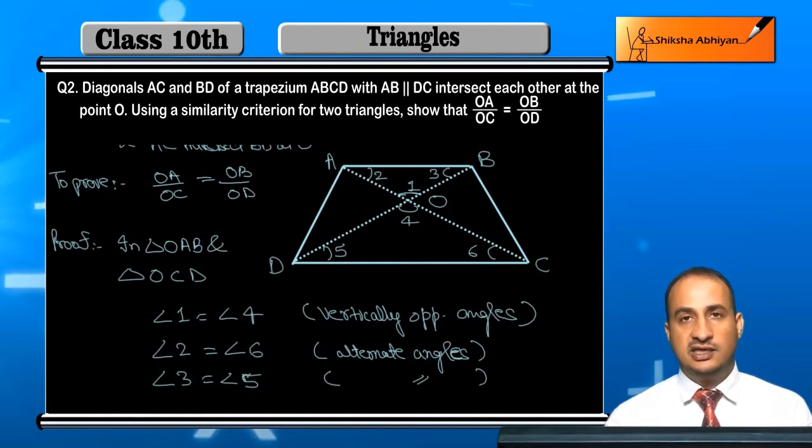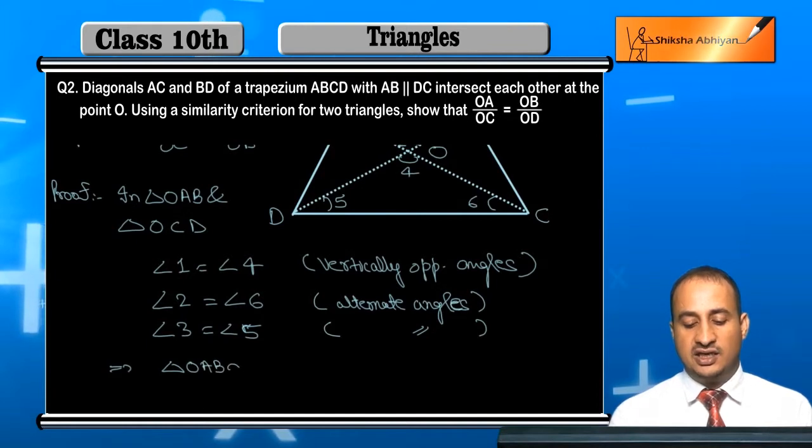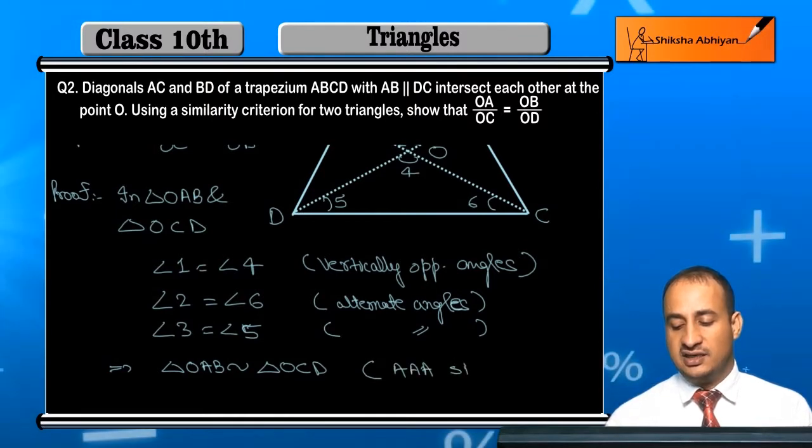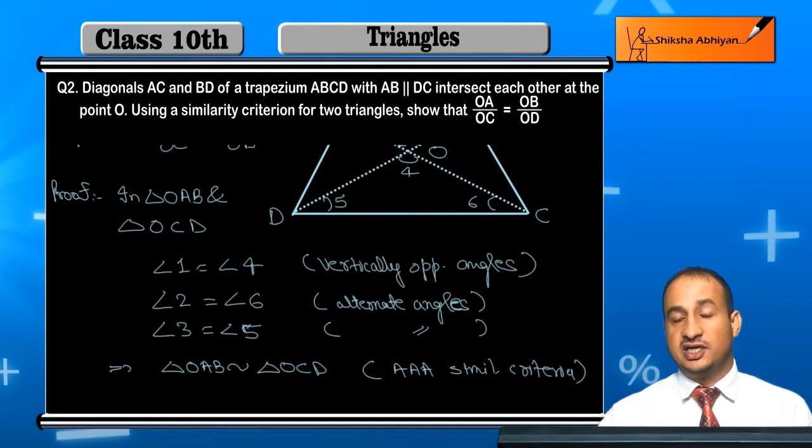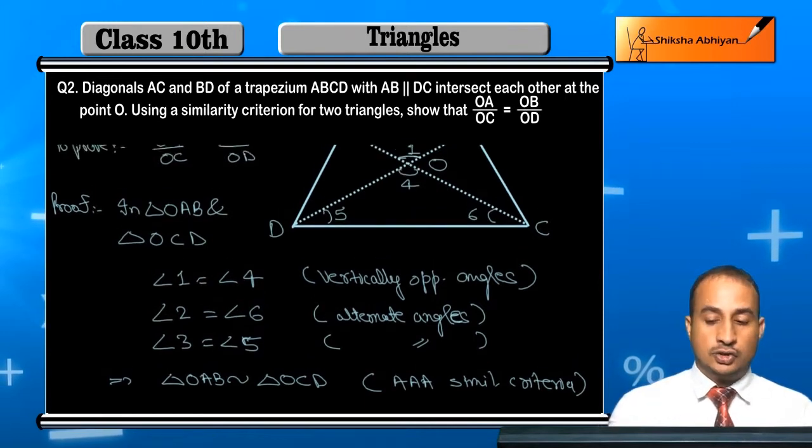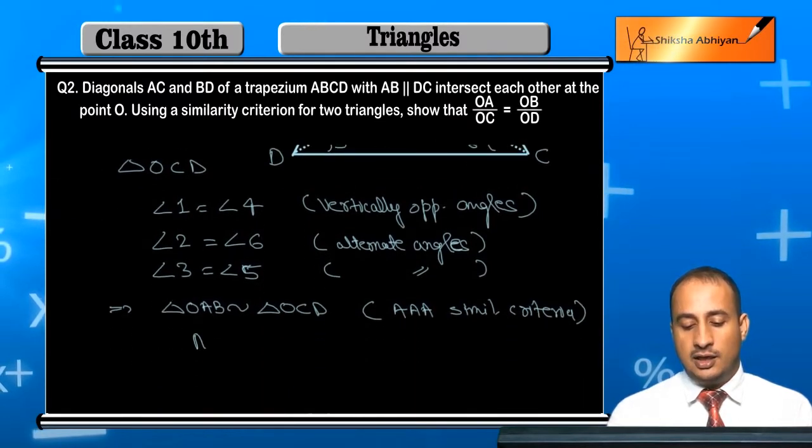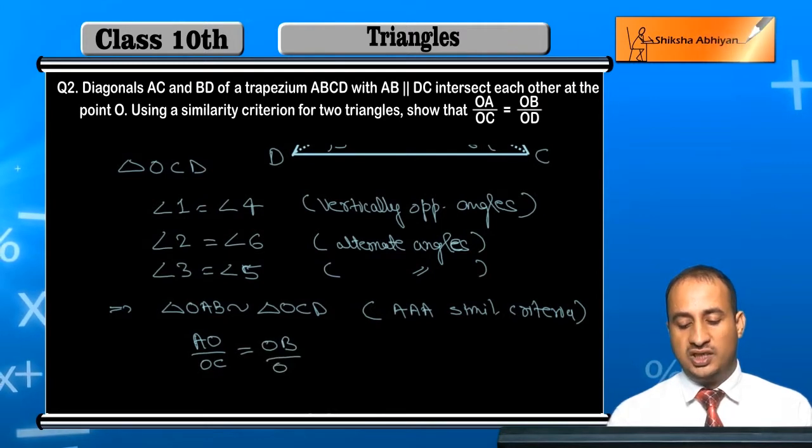Therefore this implies that triangle OAB is similar to triangle OCD by angle-angle-angle similarity criterion. So therefore what I can write: AO/OC is equal to OB/OD.